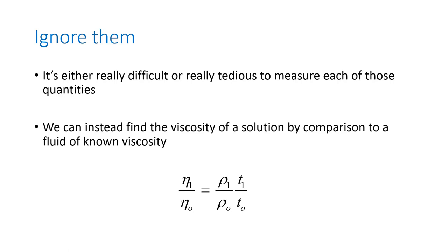So we're not going to. We're going to ignore all of those quantities. And instead, we're going to use a comparison to a fluid of known viscosity. So we're going to get a simplified equation that relates two viscosities, one known and one unknown, to the densities of the two solutions and the times the two solutions take to go through the viscometer.